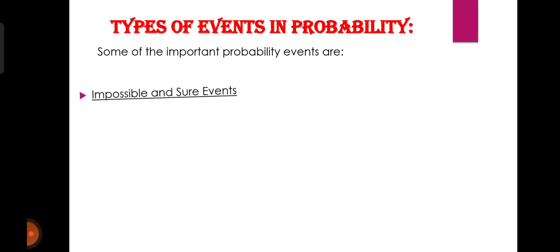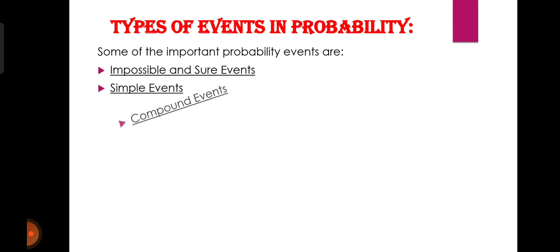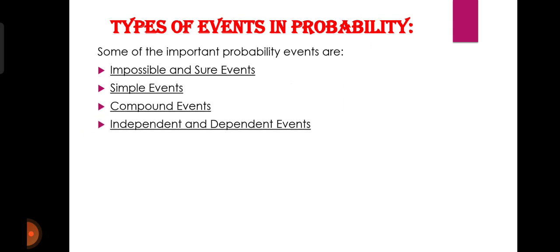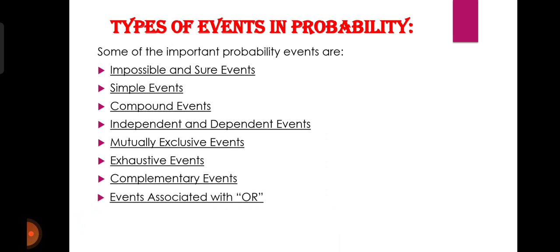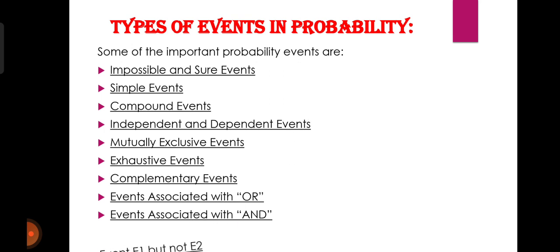अब different type की events के बारे में discuss कर लेते हैं। यह कुछ basic concepts हैं probability के जिनके बारे में आपको information होनी जरूरी है। These include: mutually exclusive events, exhaustive events, complementary events, events associated with OR, events associated with AND, and events E1 but not E2। यह कुछ particular types की events हैं जिनका एक overview हम ले लेते हैं।